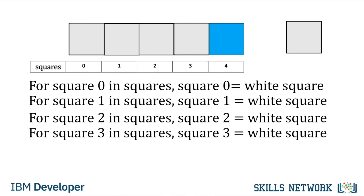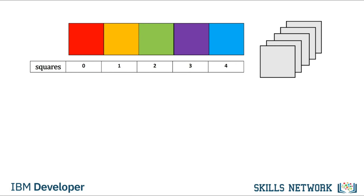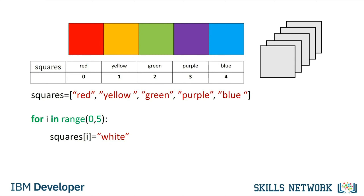If we are going to perform a similar task in Python, we use a list to represent the boxes. Each element in the list is a string representing the colour — we want to change the name of the colour in each element to white. This is the syntax to perform a loop in Python. Notice the indent. The range function generates a list, and the code will simply repeat everything in the indent five times. The value of i is incremented by one each time. In this segment, we change the ith element of the list to the string white.